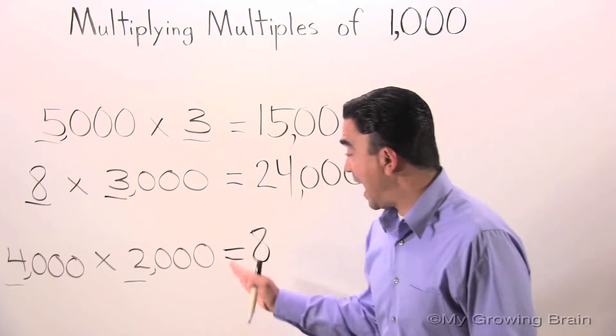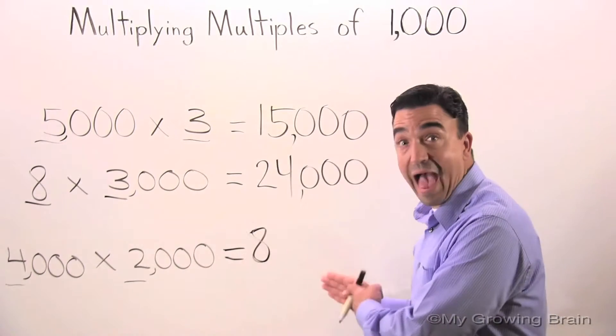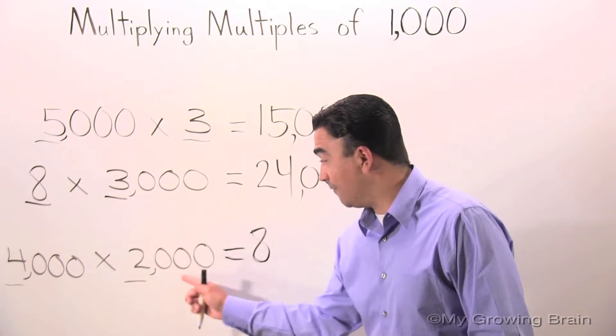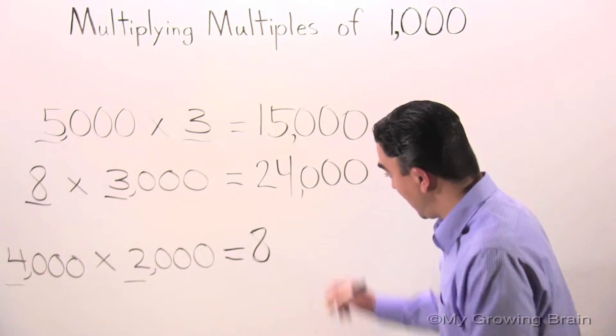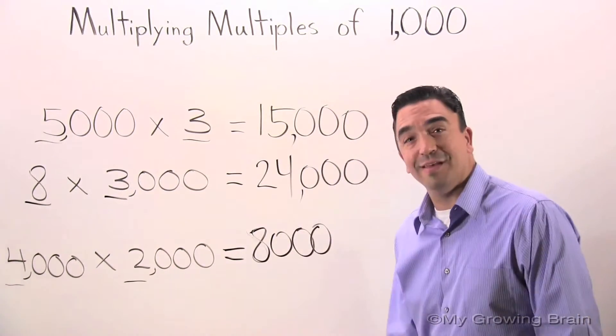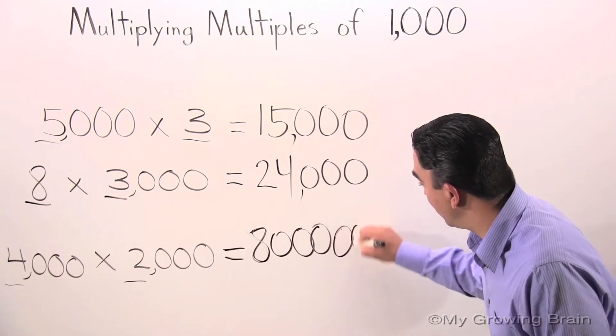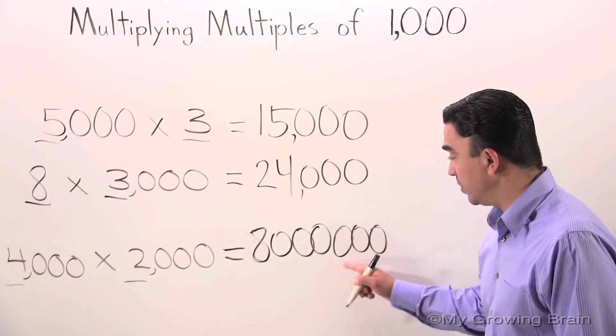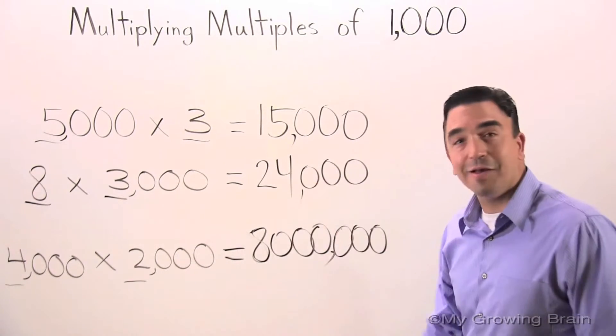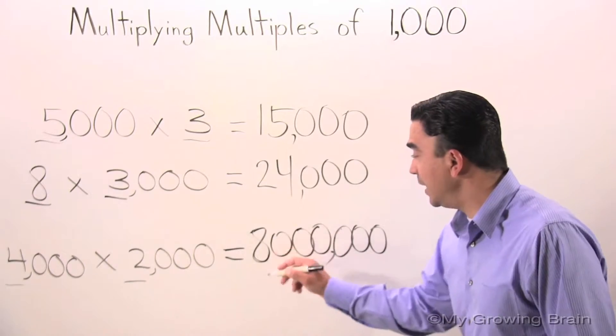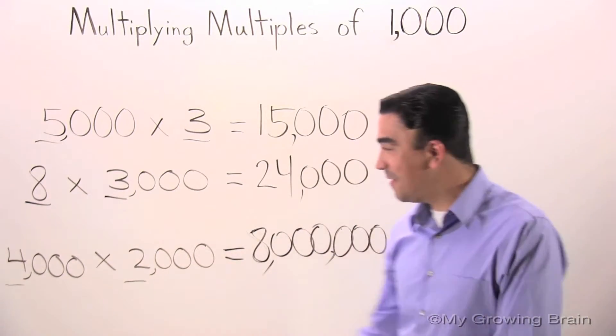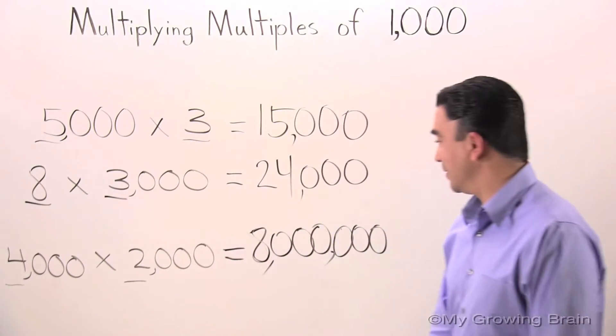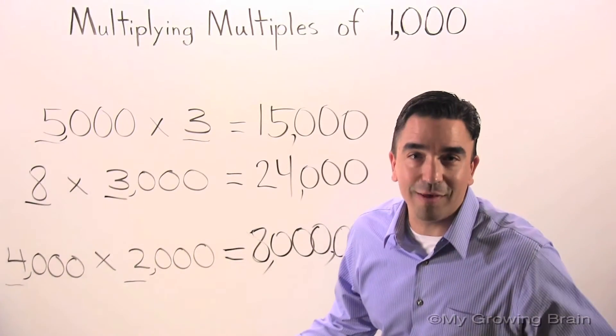Now, we have to add all the zeros and place them after the eight. One, two, three, four, five, six. Here we go. One, two, three, four, five, six. Let's put the commas in. One, two, three. Comma. One, two, three. Comma. Four thousand times two thousand equals eight million.